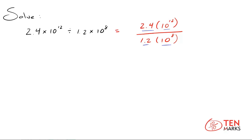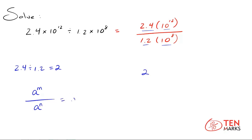What you can do is divide the factors: 2.4 divided by 1.2. Then use properties of exponents to divide the powers of 10. Starting with 2.4 divided by 1.2 — this is 2, because 1.2 is half of 2.4. So the first number is 2. Now use the quotient of powers property: if you have two exponents with the same base, you keep the base and subtract the exponents.